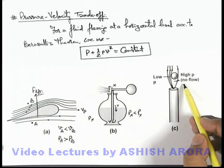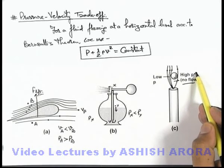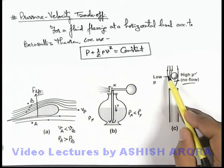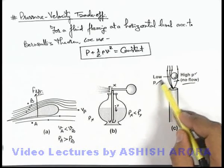So in the region of no flow pressure is high and the region where more air is passing the pressure will be low.